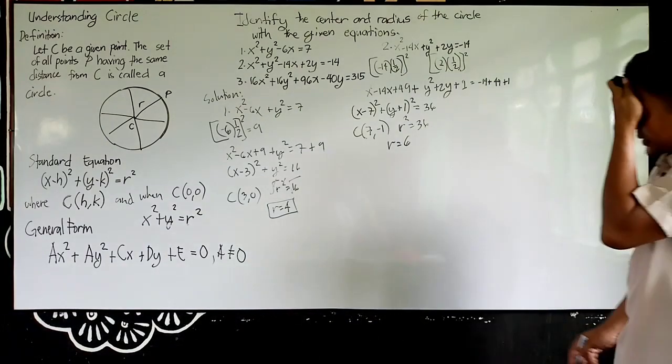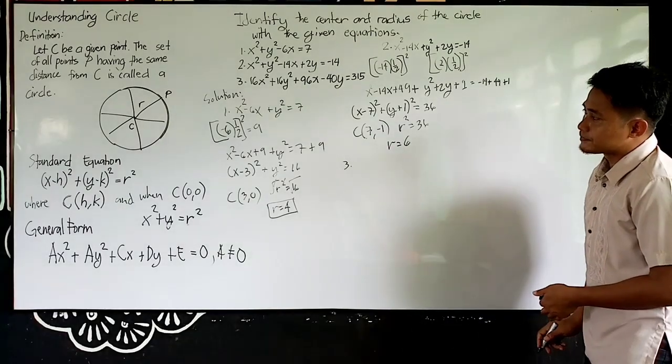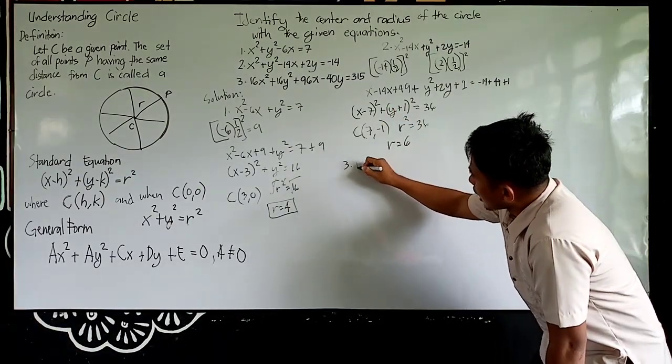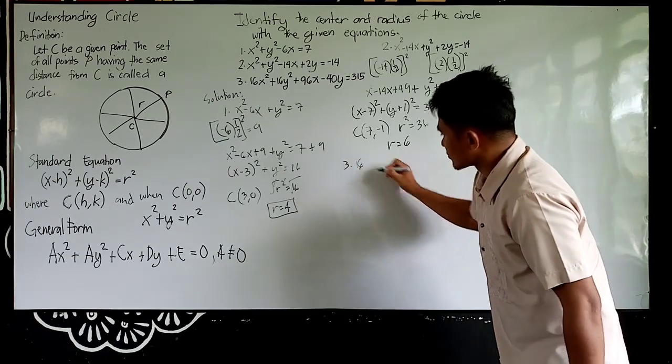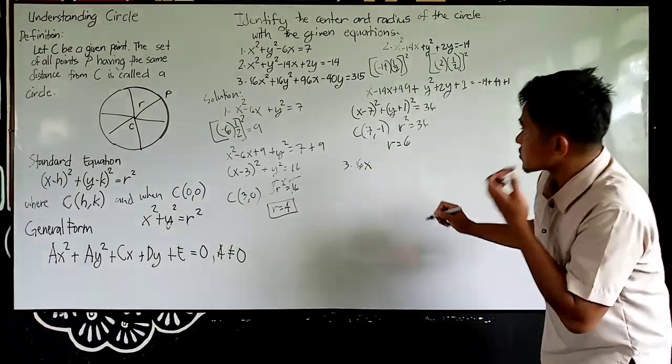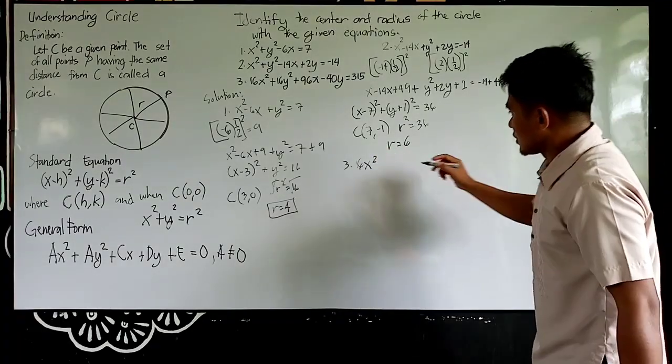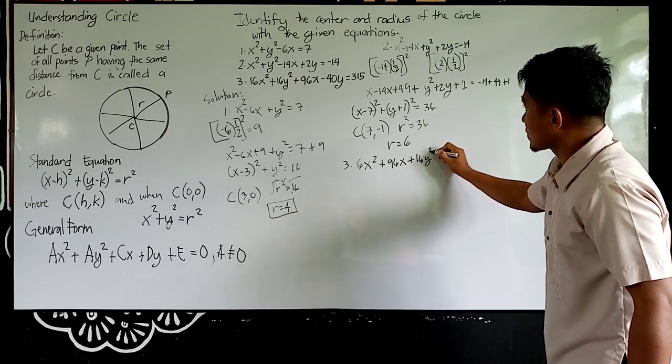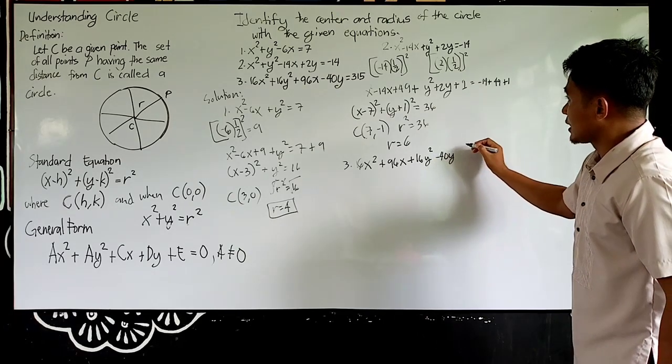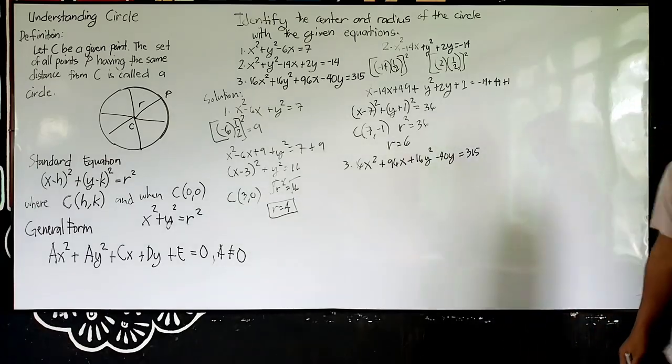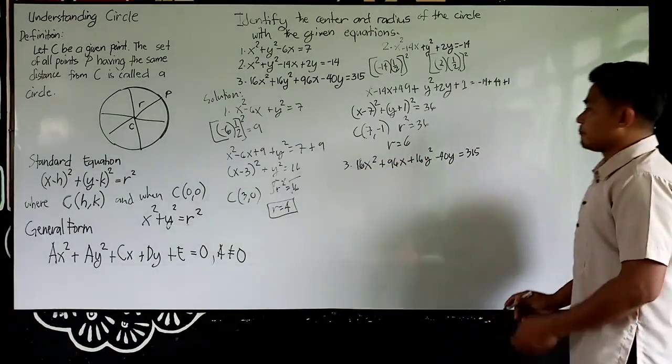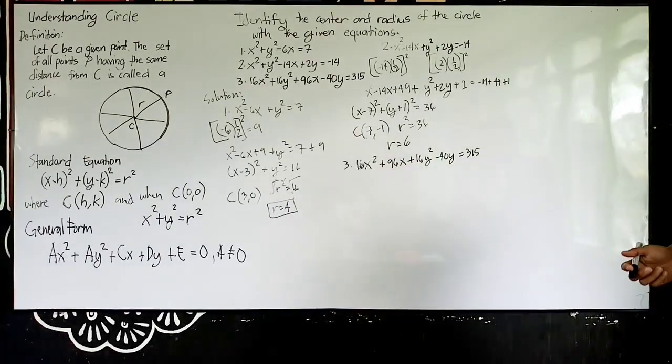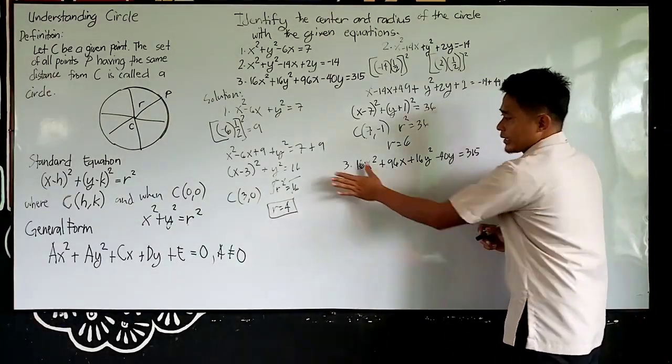How about number 3? Number 3 medyo complicated, unlike sa number 1 and number 2. So una lang gagawin, group mo according sa variable. So 16x² + 96x plus 16y² - 40y. Ito, bakit medyo complicated ito unlike sa number 1 and 2? Kasi ang coefficient ng x² tapos y² are hindi na 1, kaya nagiging complicated siya.